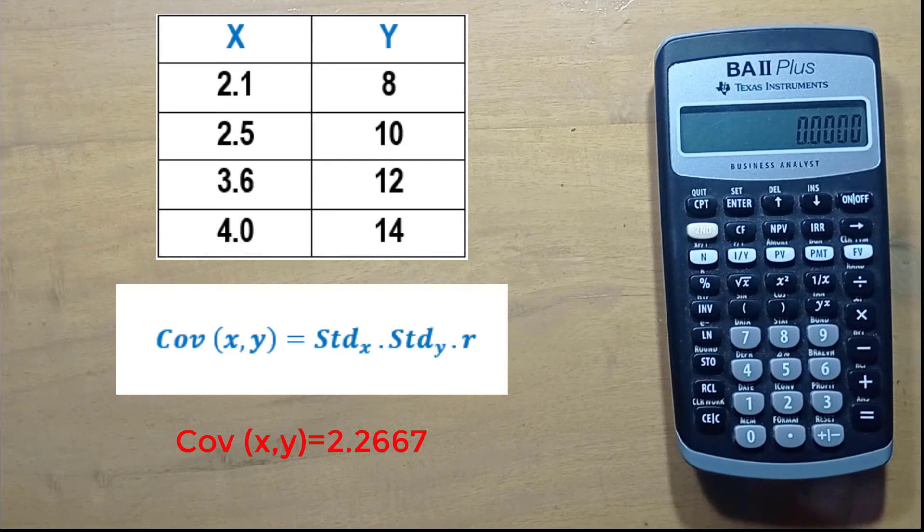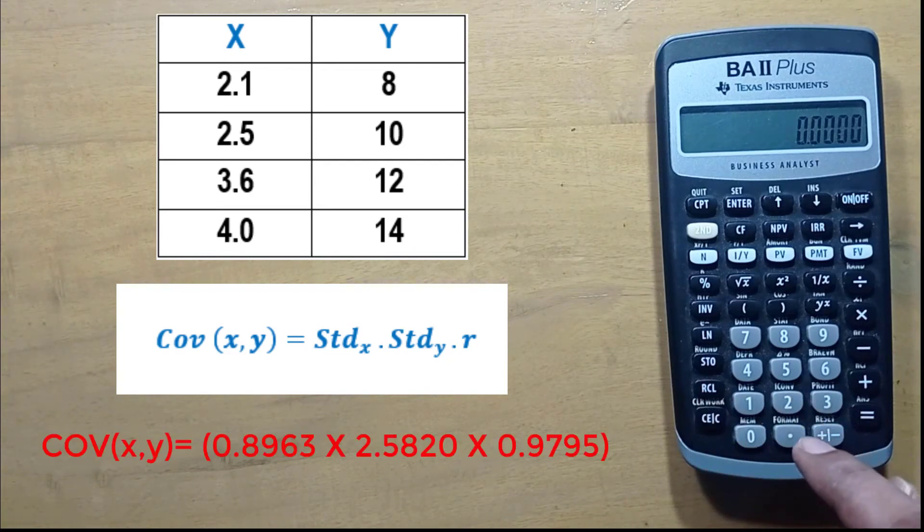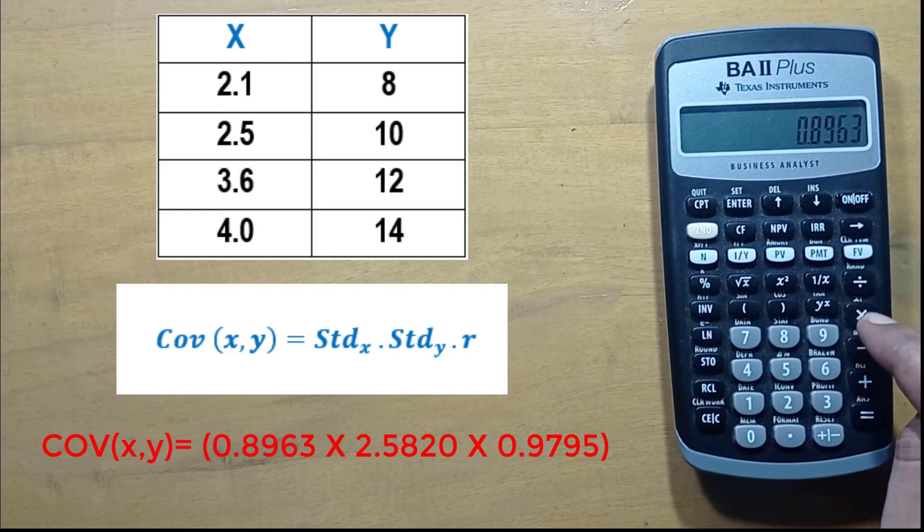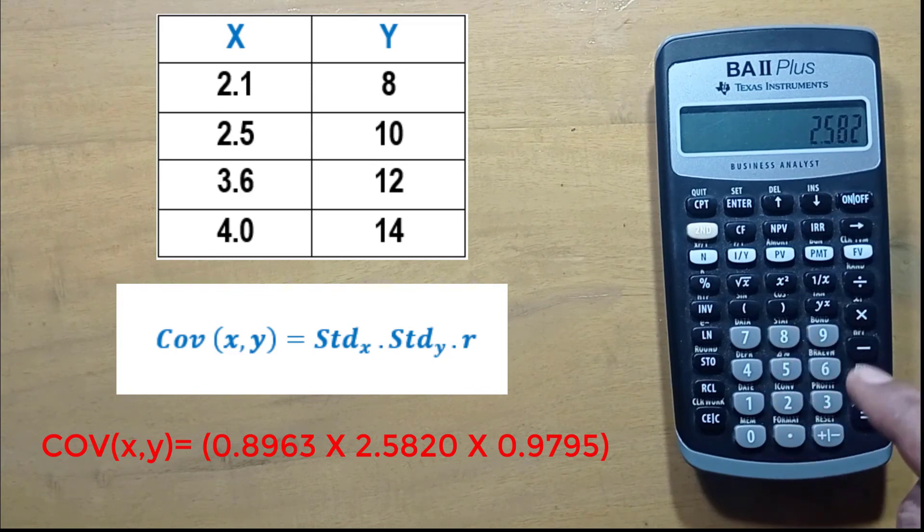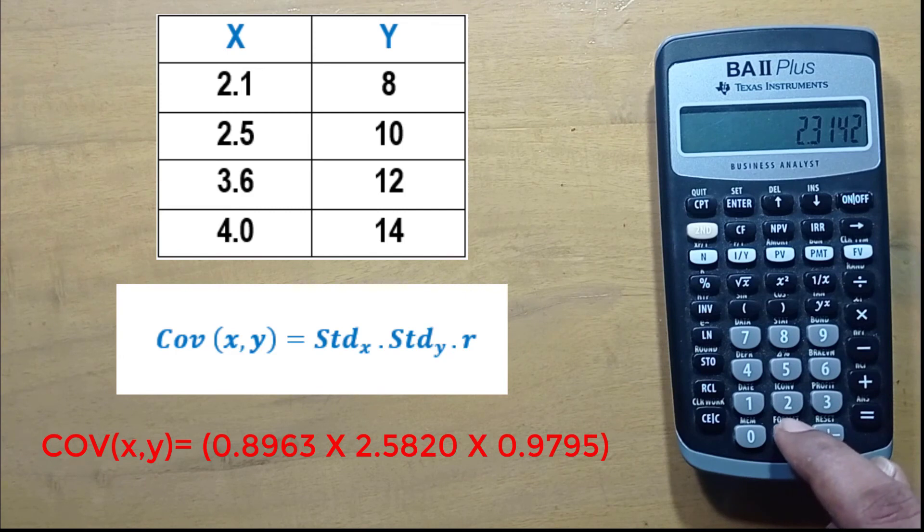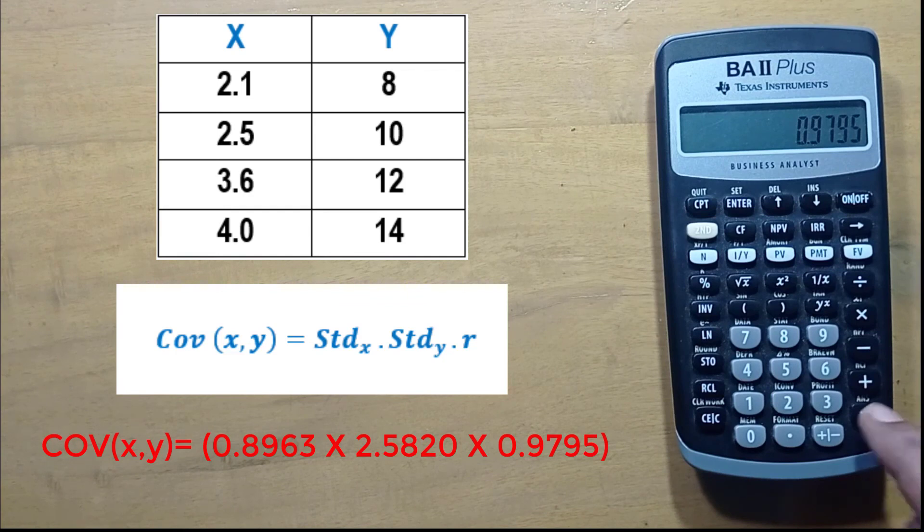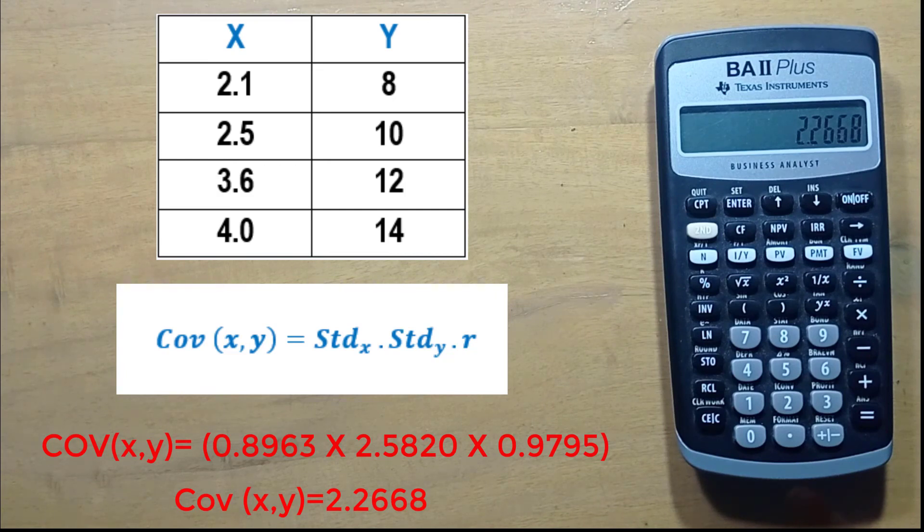It's 0.8963 (standard deviation x) times 2.5820 (standard deviation y) times 0.9795 (correlation coefficient r). Just press equal sign. This is our covariance. This is how we can easily calculate covariance.